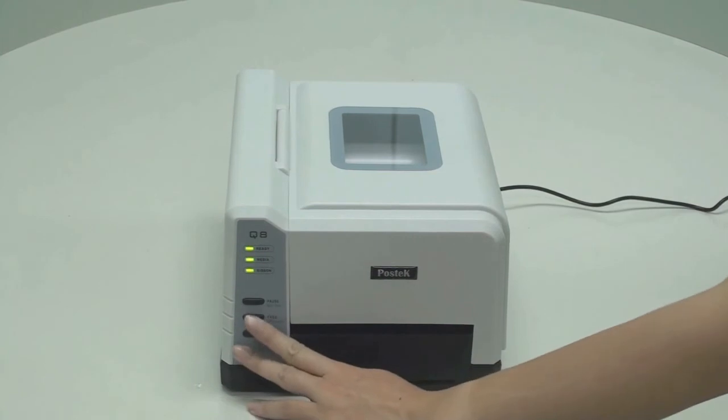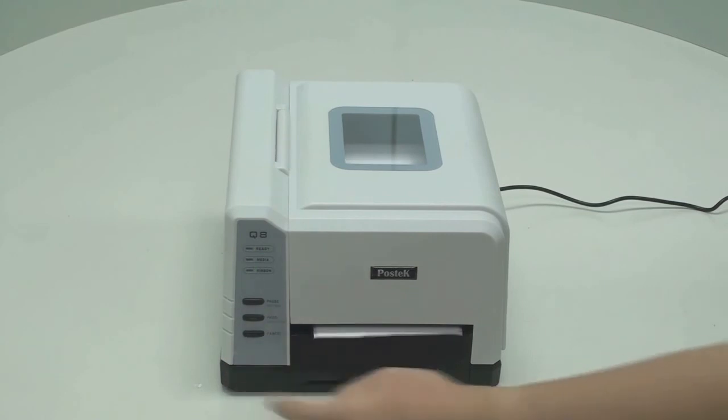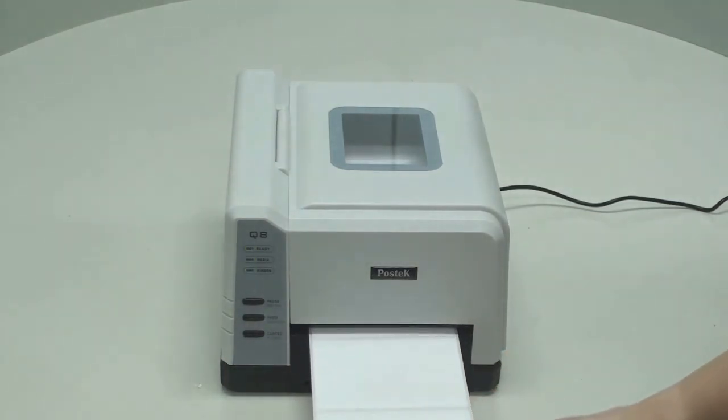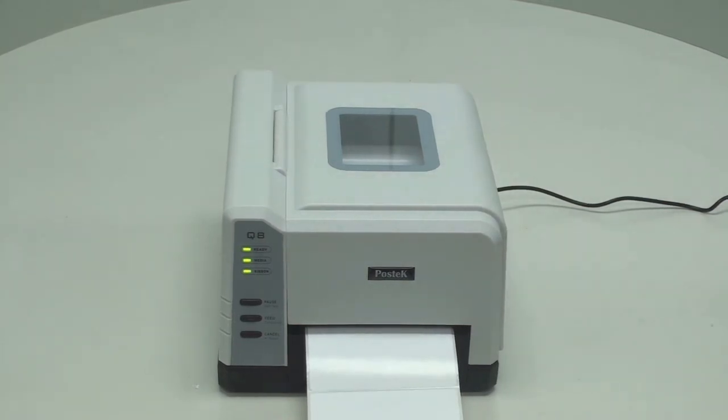Press and hold the feed button for several seconds until the printer feeds three to four labels. Release the feed button. The three indicator lights will stop blinking, but will remain lit. The media calibration is now complete and the Q8 series printer is ready for your print job. Just remember, any time you change the label size, perform a media calibration.